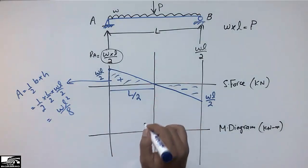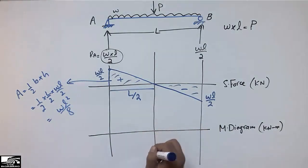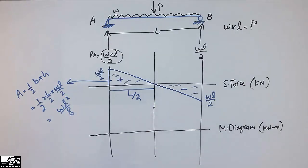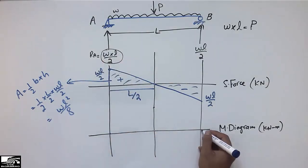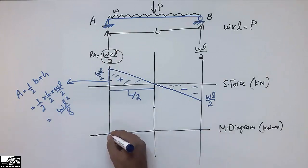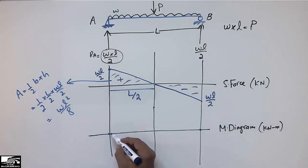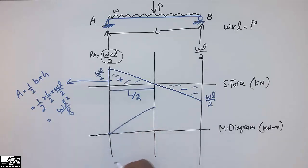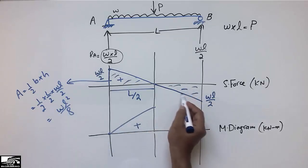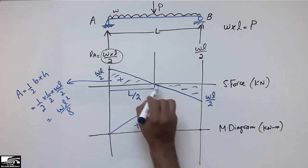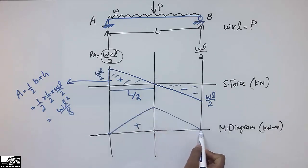Where the shear force is zero, the bending moment is maximum. At the support points, since they are hinge supports, the moment is zero. The maximum moment occurs at the midpoint and equals WL²/8. The area of the other triangle also equals WL²/8, so the bending moment returns to zero at the far support, forming a positive parabolic curve.